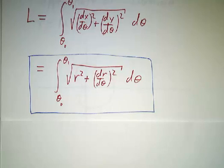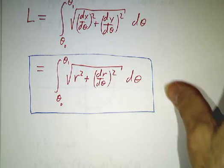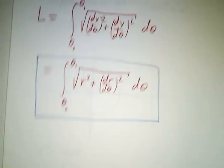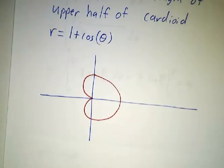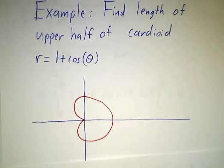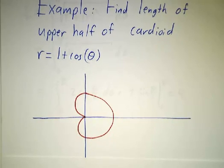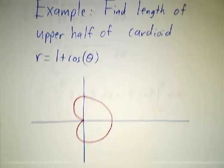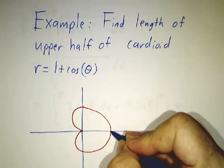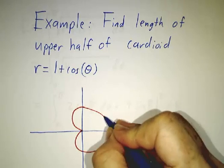So let's see how that works. Let's figure out the length of a cardioid. Actually we're not going to quite figure out the length of a cardioid - we're going to figure out the length of half of a cardioid. If you want to figure out the length of a cardioid, take the answer we're about to get and multiply it by 2. So we're going to figure out this half of the cardioid.